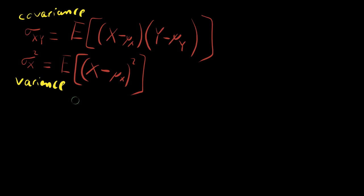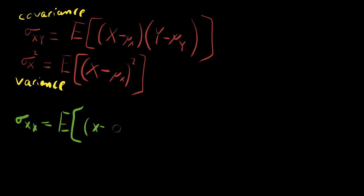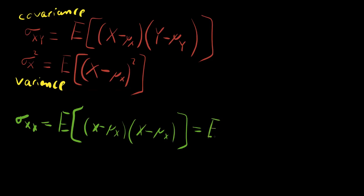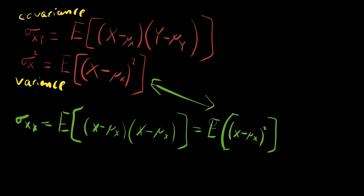Here's a question: what is the covariance of one variable with itself — the covariance of x with x? You can pick any arbitrary random variables to covariate together, so what is covariance of x and x? It's the expected value of x minus mu of x times x minus mu of x. This can be factored — it's just the expected value of x minus mu of x squared, which is exactly the variance of x. The covariance of a random variable with itself is its variance.